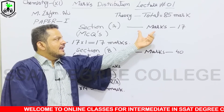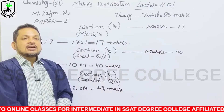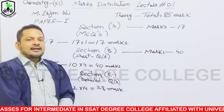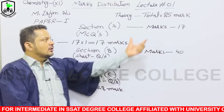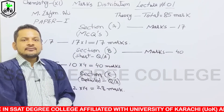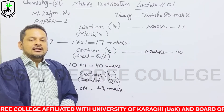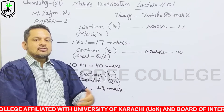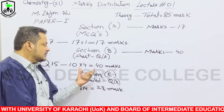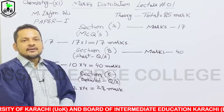Section A 20 Minutes میں اور Section B تقریباً 90 Minutes یعنی ڈیڑھ گھنٹے میں Complete ہو گا۔ دونوں Sections ملا کر 110 Minutes ہو جاتے ہیں، تو آپ کے پاس Section C کے لیے تقریباً 70 Minutes یعنی ایک گھنٹہ اور 10 Minutes بچ جاتے ہیں۔